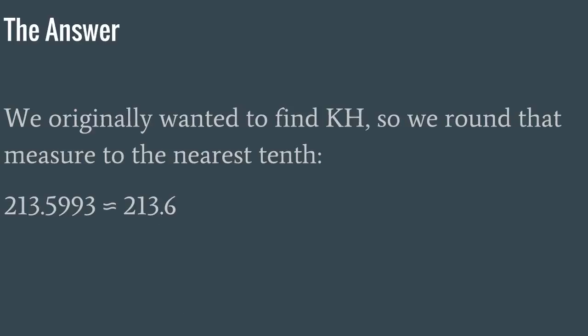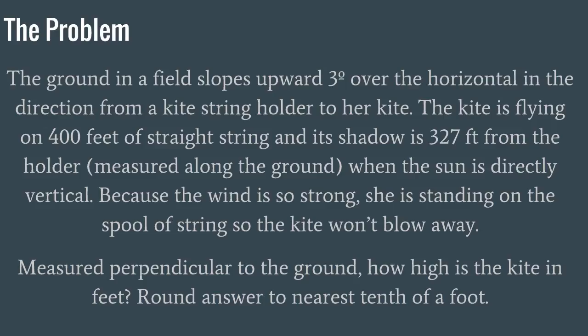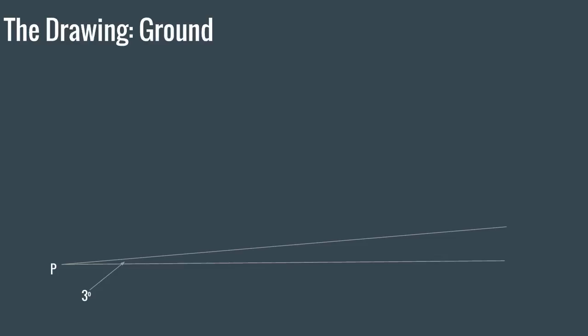So yeah. I think the hardest part of this problem is really figuring out the diagram. The first thing that really confused me is how the ground in a field slopes upward 3 degrees over the horizontal. I didn't understand what that meant at first. But this actually comes up in another problem. Basically, what they're saying is the ground is above the horizontal, and then the angle is 3 degrees.